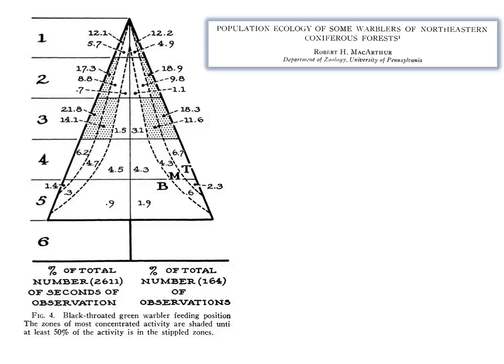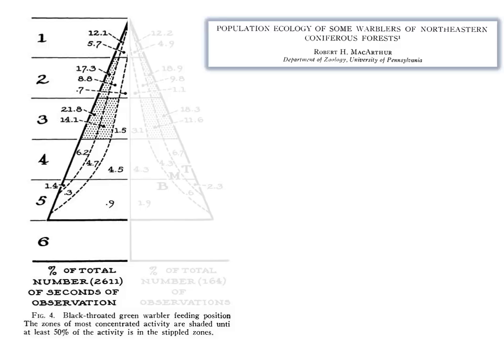He would then record the number of seconds that an individual spent in a particular portion of the tree. This figure illustrates the data from one of those species, the black-throated green warbler. Let's consider for now just the left side of this figure, which represents percentage of time an individual spent in each of these zones.